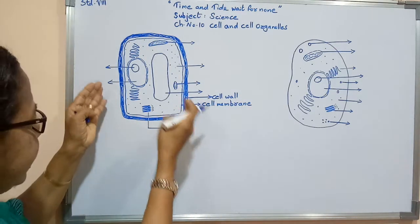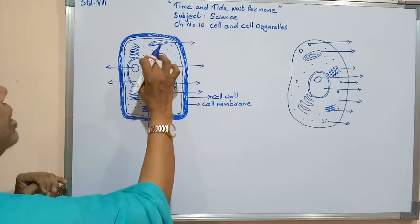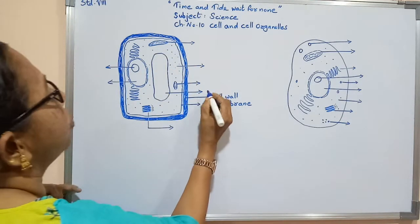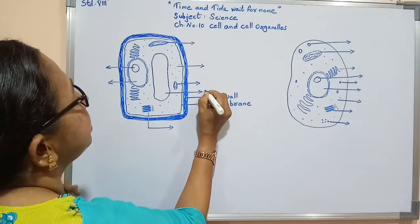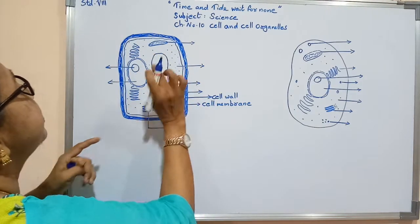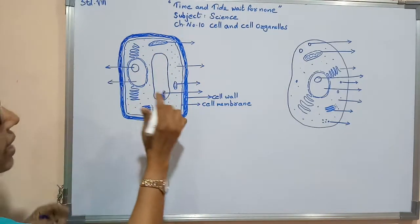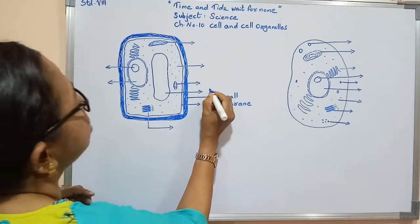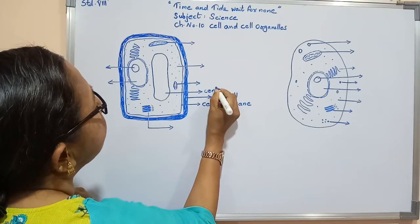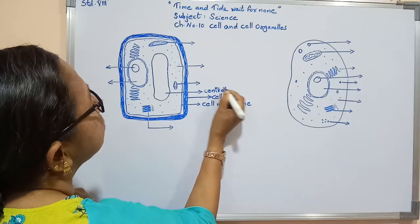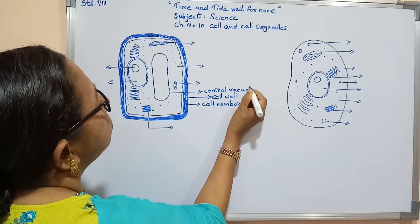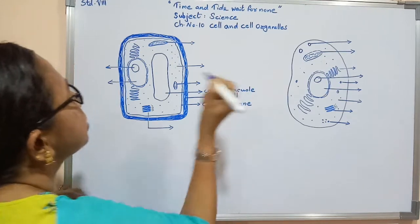Inside the cell membrane you can find that a large vacuole is present, located at the center of the plant cell. This is known as the central vacuole.